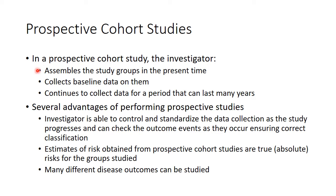In a prospective cohort study, investigators assemble groups in present time, collect baseline data, and then collect data over many years. Advantages include the ability to control and standardize data collection as the study progresses, correctly classify outcomes as they occur, obtain true or absolute risk estimates for the study group, and study many different disease outcomes — since subjects are assembled based on risk factors or exposures and followed forward, you can look at all kinds of disease states that develop.